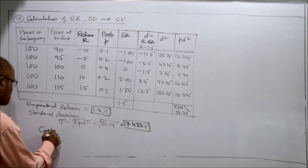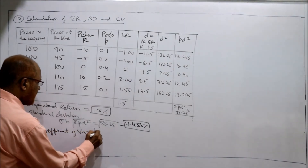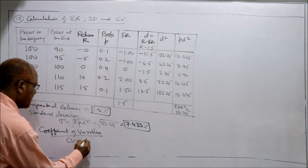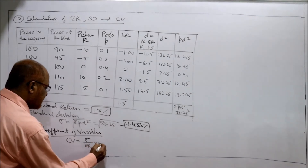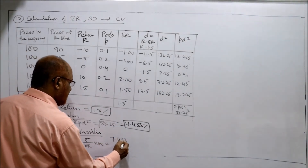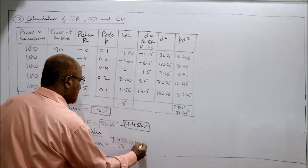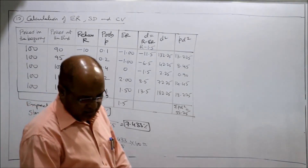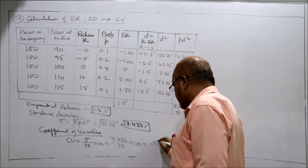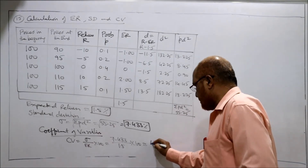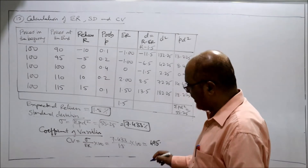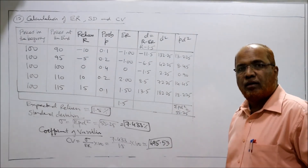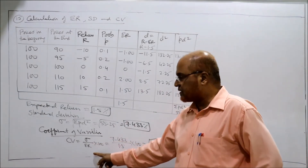Now we can calculate the coefficient of variation. The first time it is asking you to calculate the coefficient of variation. CV is equal to standard deviation divided by expected return into 100. So standard deviation is 7.433 divided by 1.5 into 100. You will get 495.53. This is the coefficient of variation CV. The formula is simply standard deviation divided by expected return into 100.